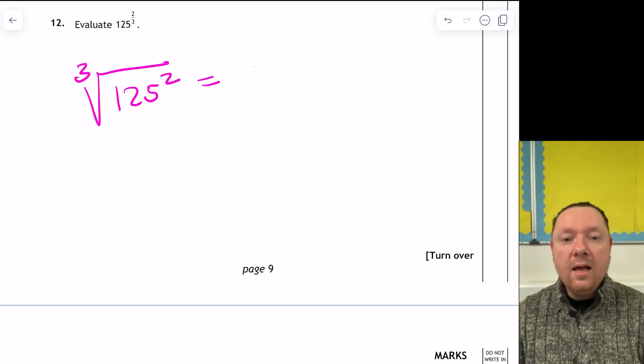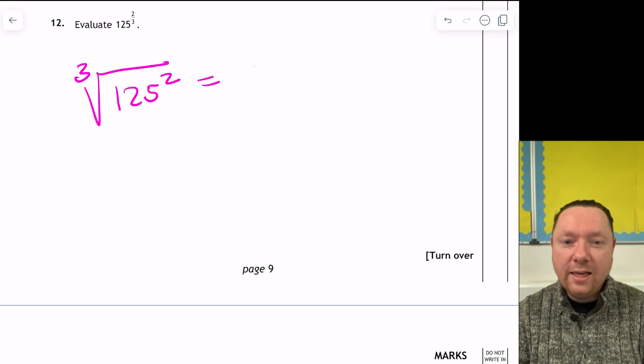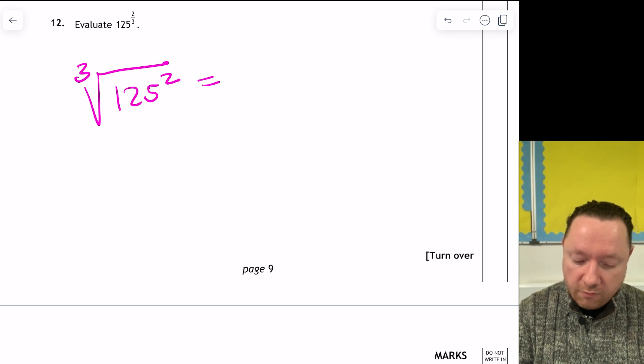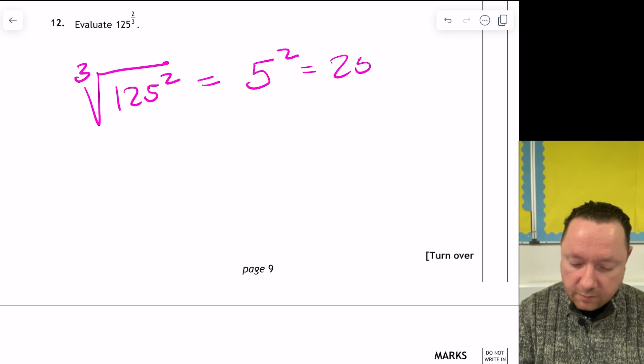Now you might not know the cube root of 125. So you just go 1 times 1 times 1, that's not it. 2 times 2 times 2, that's 8. 3 times 3 times 3, 27. 4 times 4 times 4, 64. 5 times 5 times 5 is 25. Now you might have known it was 5 to be honest. Because it ends in 5. So I've got 5 as the cube root. And I've started to square it. So 5 squared is 25.